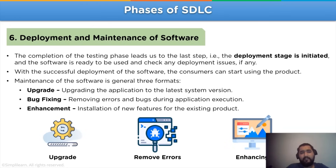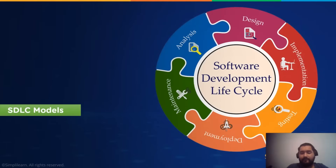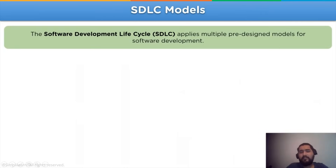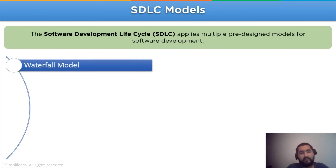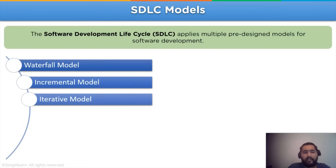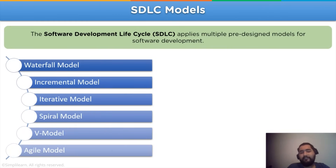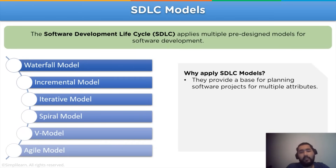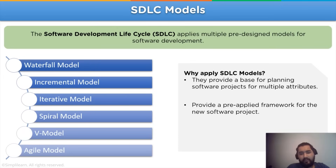We are now completed with the multiple steps involved in SDLC processing. Let's move on to the next heading: models used in SDLC. The SDLC models are applied because they provide a pre-designed model for the developer to use. The models that SDLC applies include: waterfall model, incremental model, iterative model, spiral model, V model, and agile model. These are the most generally used models in SDLC. They are applied because they provide a base for planning software projects, a pre-applied framework for new software projects, and they decrease the chances of bugs and errors occurring in the software.